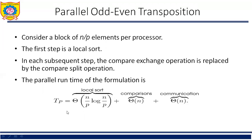The parallel runtime TP can be calculated as: local sort plus comparisons plus communication, giving O((N/P) log(N/P)) + O(N) + O(N). Since the sequential complexity of sorting is O(N log N), the speedup S equals O(N log N) divided by O((N/P) log(N/P)) + O(N), and the efficiency is 1 divided by [1 + O(log P / log N) + O(P / log N)].